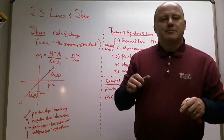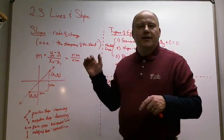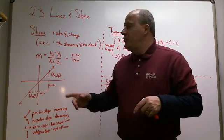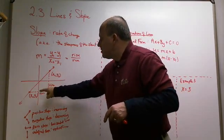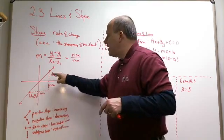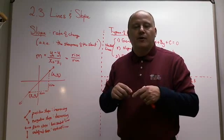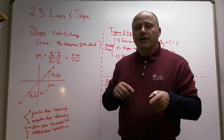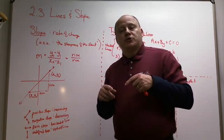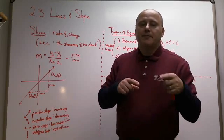A lot of people ask whether the subscripts matter — if you use y1 minus y2 instead of y2 minus y1. It doesn't matter which direction you go, but you have to keep it consistent. If you subtract y2 minus y1 on top, you must subtract x2 minus x1 on the bottom in the same order. If you mix them up, your slope will come out backwards — for example, instead of two-thirds you'll get negative two-thirds.